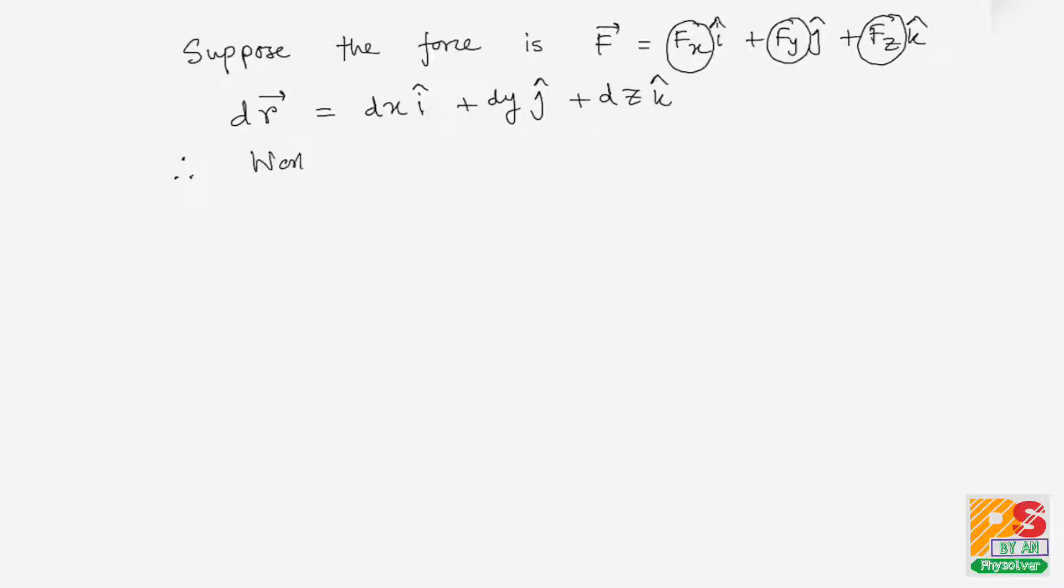Therefore, the work done will be dW equals F vector dot dr vector. Since dr is very small, I can assume that over the span of dr, F is remaining constant. Therefore, by doing dot product, we can say it will come as Fx dx plus Fy dy plus Fz dz.